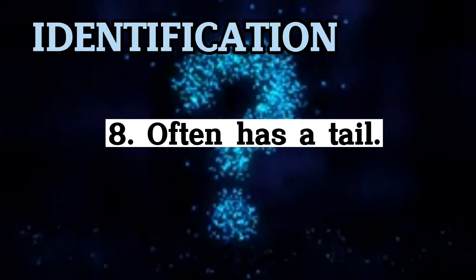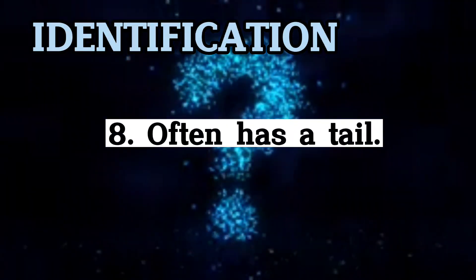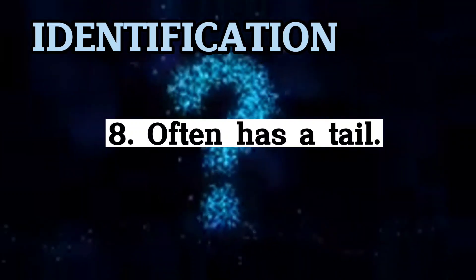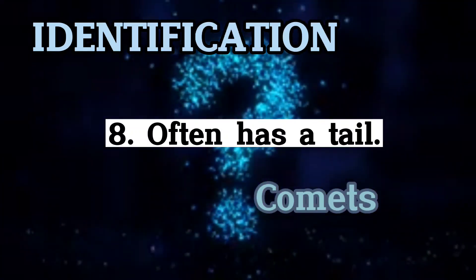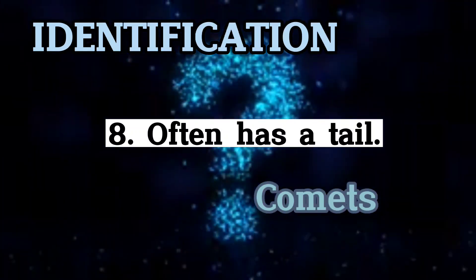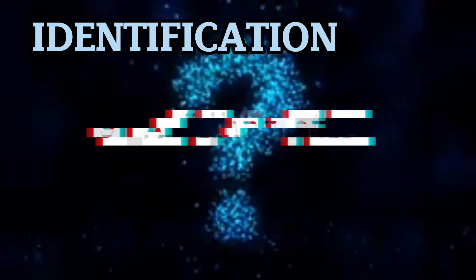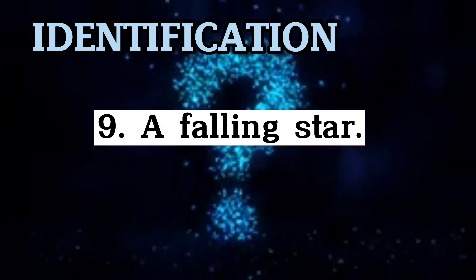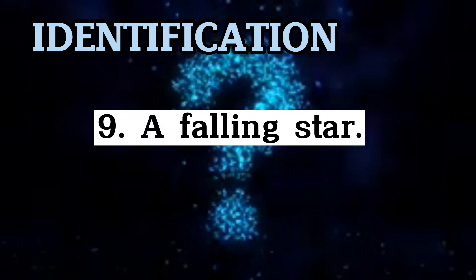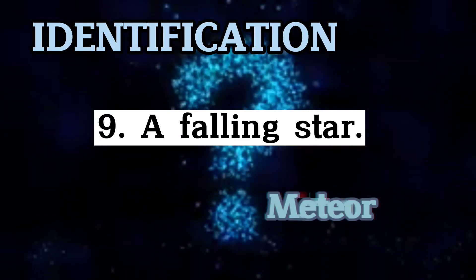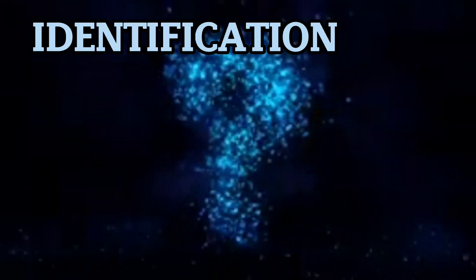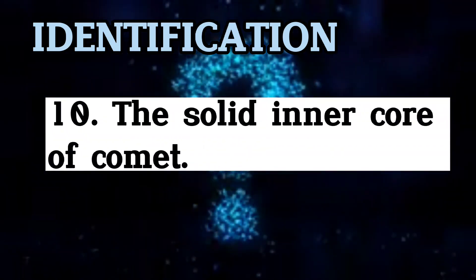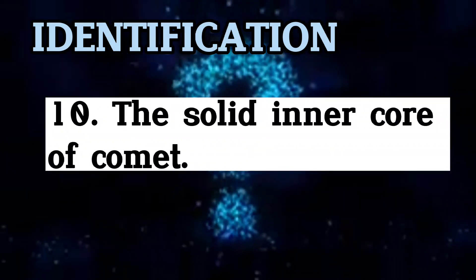Six: meteors are sometimes called — ? Seven: when a meteor hits Earth, what is it called? Eight: often has a tail. Nine: a falling star.